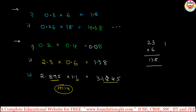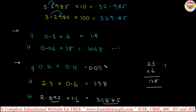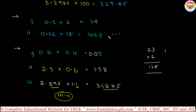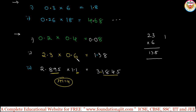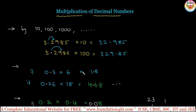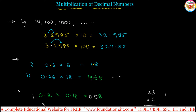So this is the way we can multiply — three categories. One is multiplying by 10, 100, 1000: as many zeros as there are, shift the decimal point that many places to the right. With a whole number or another decimal number, count the total decimal places and adjust in the answer. Next, let us see how to divide decimal numbers.